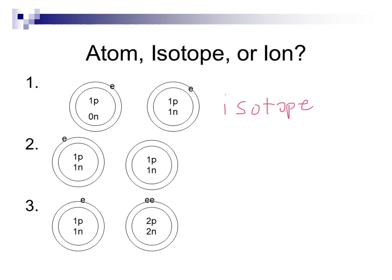In our second example, I've got one proton, one neutron, and one electron. And in the second part of this example, the second atom that we're comparing here, the only thing that has changed is how many electrons there are. There's nothing in this one. So, because the electrons have changed, this is called an ion.